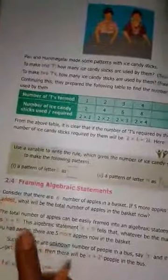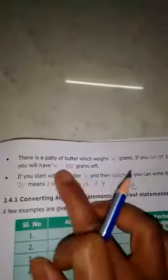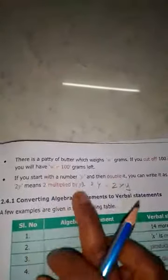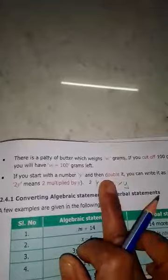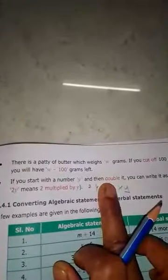So in this method, how to write: when added, use plus symbol. Take away or balance left means minus symbol. And for product, double, thrice, twice, you use multiplication symbol.